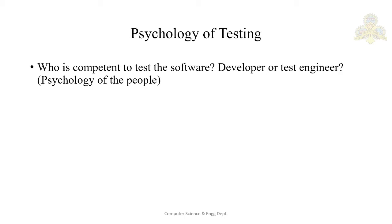Now, if you ask the same question to a test engineer, his definition might be: it is a process to prove that the software does not work. This appears to be a sad definition, but surprisingly when software is given to a QA or testing department in your organization, they follow this definition — their only aim is to find bugs and prove that the software does not work.